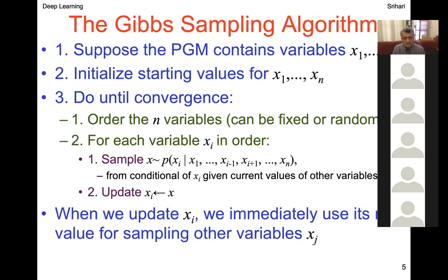The Gibbs sampling algorithm: suppose it contains variables x1 through xn. Initialize the starting value and until convergence: sample from x_i given all other variables except x_i; update the i-th variable; run through all n variables. By the time we're done, we have one sample.